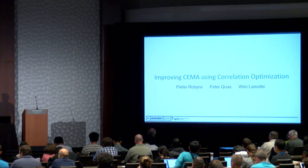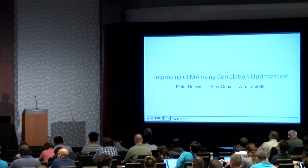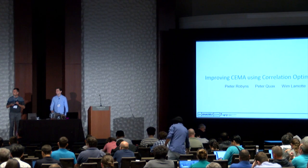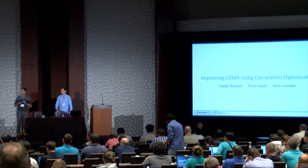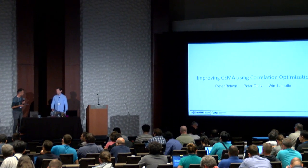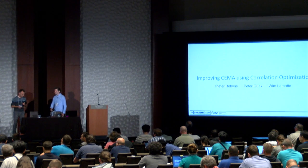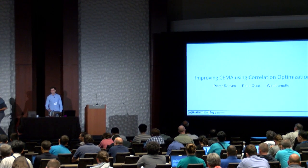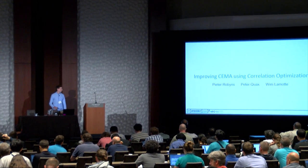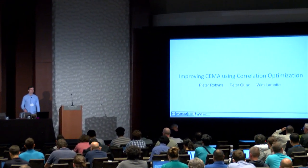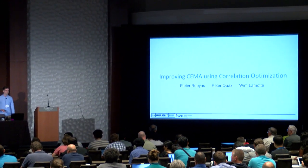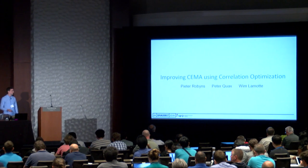The first presentation is entitled 'Improving CMA Using Correlation Optimization.' The work is by Peter Robbins, Peter Quox, and Wim Lamott, and the presentation will be given by Peter. Thank you for the introduction. It's an honor to be here, and in this presentation I'll talk about how to improve CMA attacks using a technique that we developed, which is called correlation optimization.